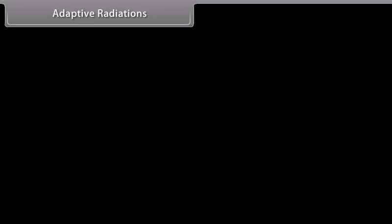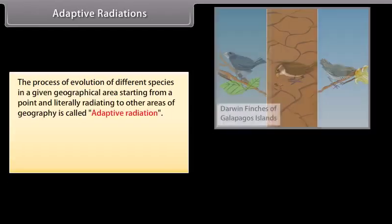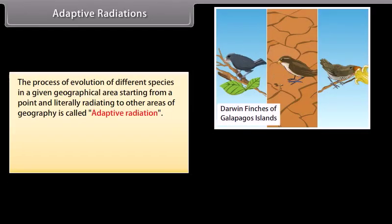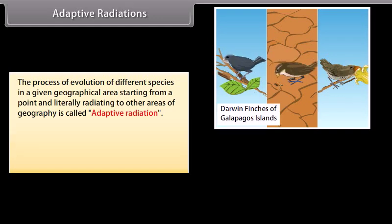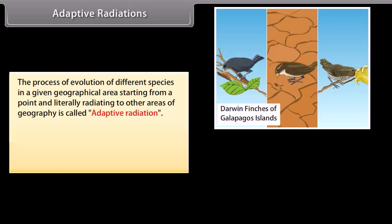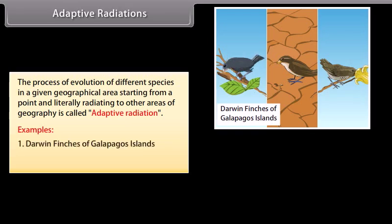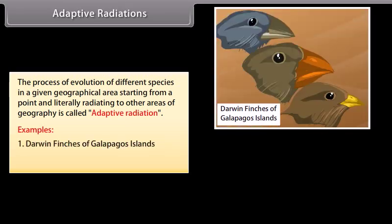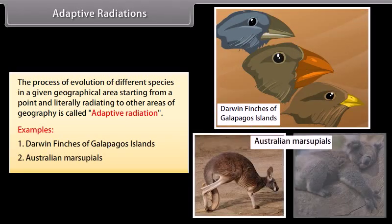Adaptive Radiation: The process of evolution of different species in a given geographical area, starting from a point and literally radiating to other areas of geography, is called adaptive radiation. Examples include Darwin's finches of the Galapagos Islands and Australian marsupials.